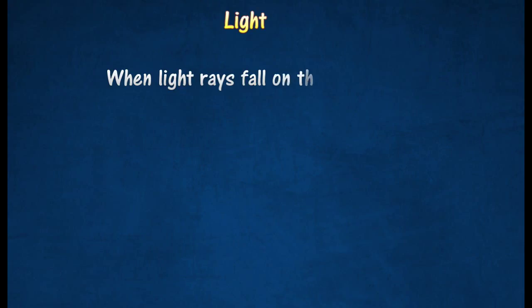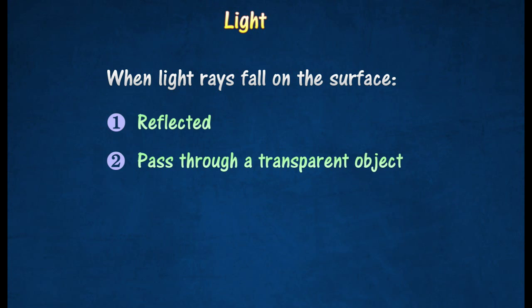When light rays fall on the surface of an object, they may be reflected from a smooth or rough surface, able to pass through a transparent object, or absorbed by an opaque object.